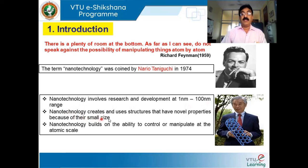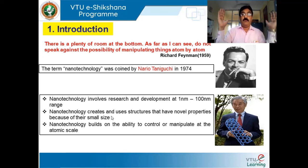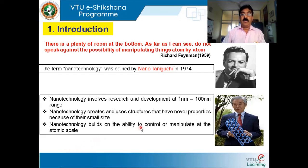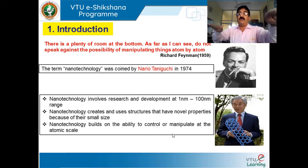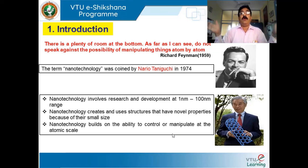Nanotechnology creates and uses structures that have novel properties because of their small size. Size matters a lot. We were talking about macroscopic and microscopic domains, but now we are getting into the nanoscopic domain where size is very, very small. Nanotechnology builds on the ability to control and manipulate at the atomic scale. You can grow material only along the x-axis, y-axis, or z-axis — that type of manipulation and freedom you have, depending upon your requirement.